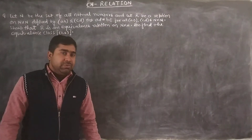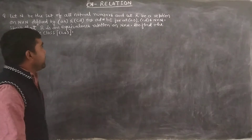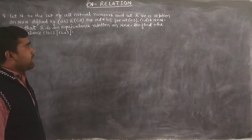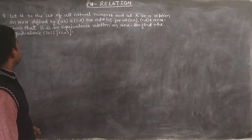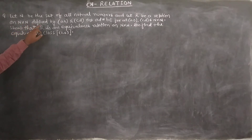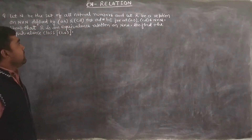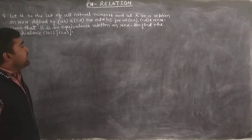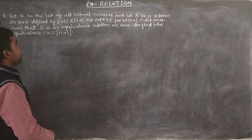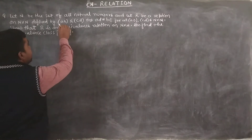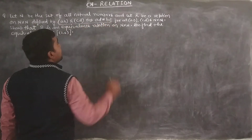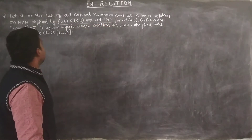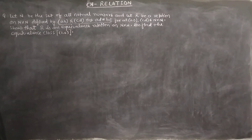Relations chapter 6 important question. Let N be the set of all natural numbers and let R be a relation on N×N defined by: (a,b) is related to (c,d) implies that a·d equals b·c, for all (a,b),(c,d) belonging to N×N.